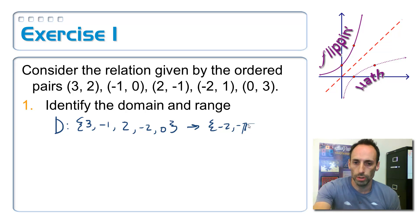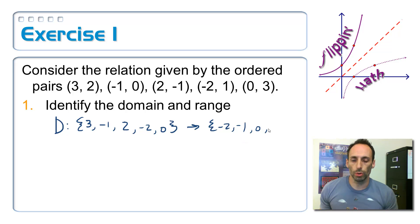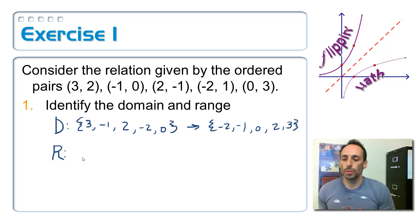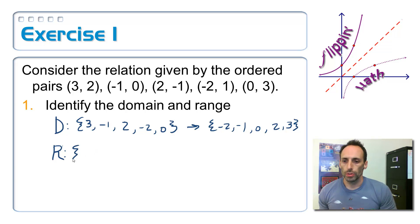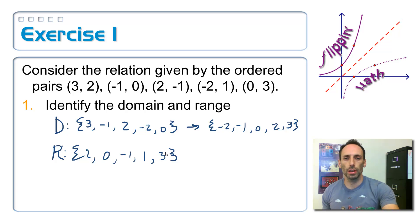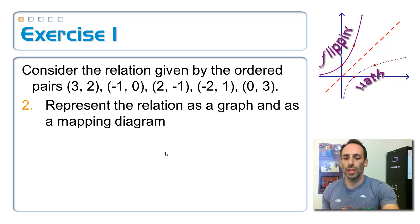For the range, list all y-values — all outputs. From the ordered pairs I get 2, 0, negative 1, positive 1, and 3. There's no complication to that whatsoever.